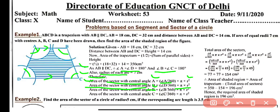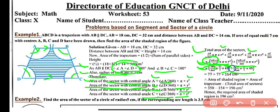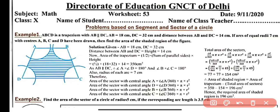Area of sector with central angle B = (B/360) × πr², and with angle C = (C/360) × πr². Total area of four sectors = [(A+D)/360] × πr² + [(B+C)/360] × πr². Since A+D = 180° and B+C = 180°: each pair gives (180/360) × (22/7) × 49 = 77 cm². So area of four sectors = 77 + 77 = 154 cm².